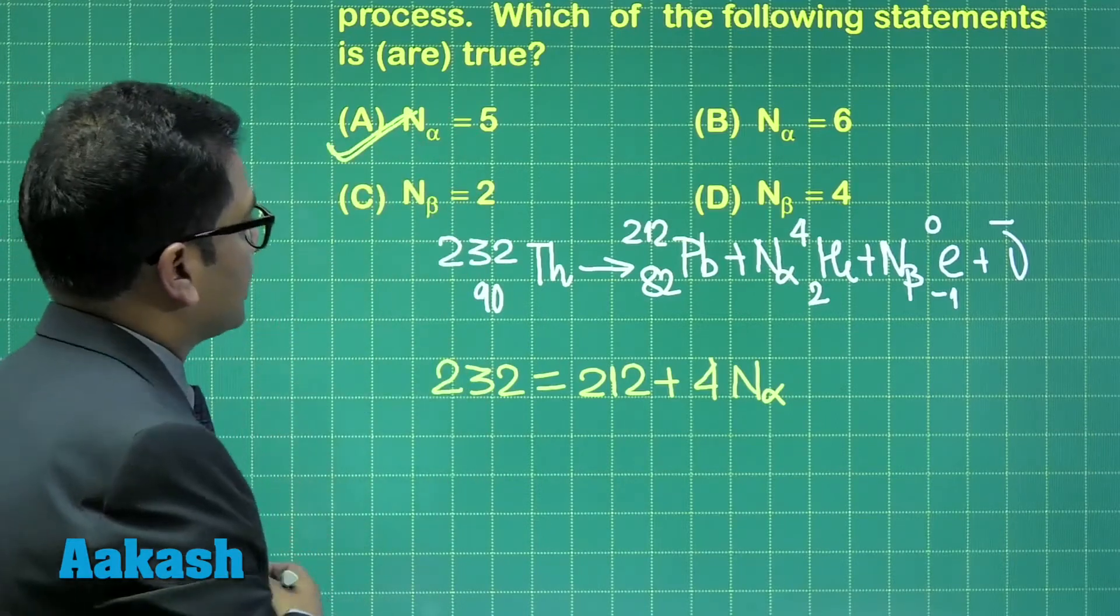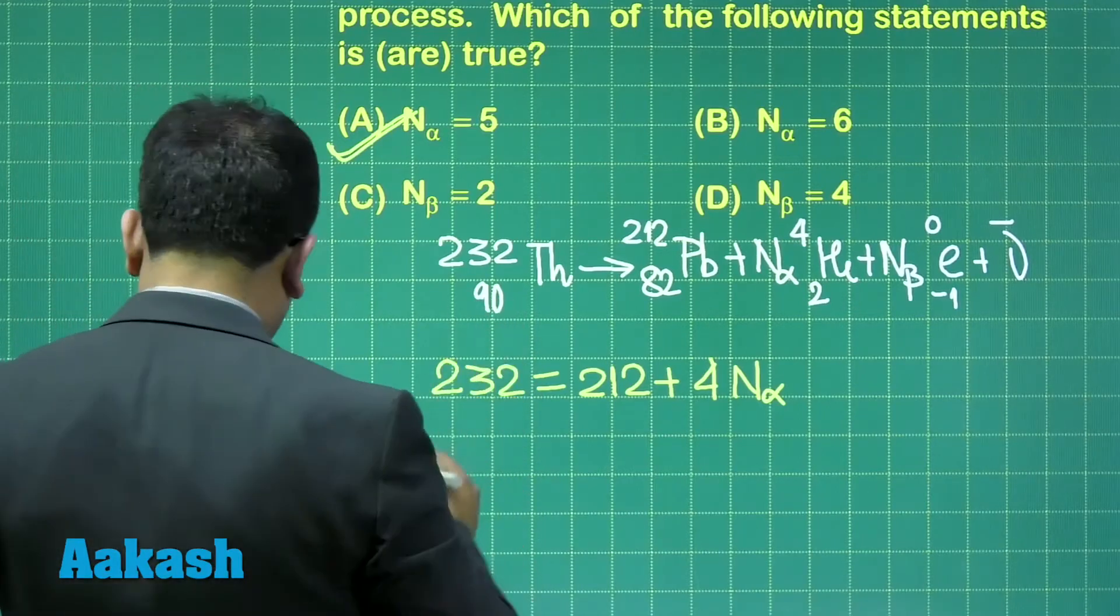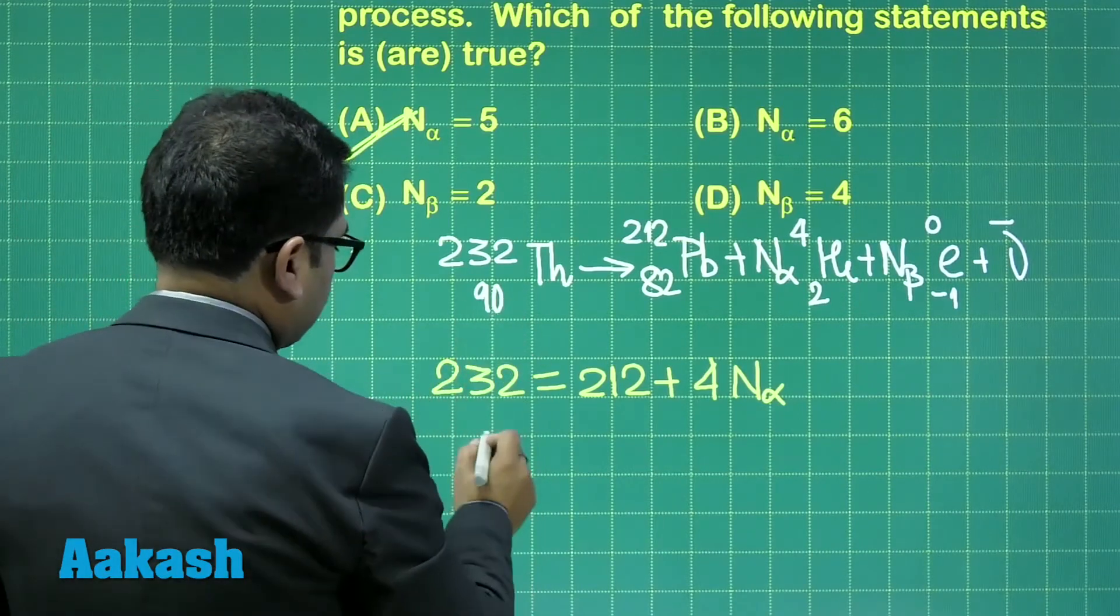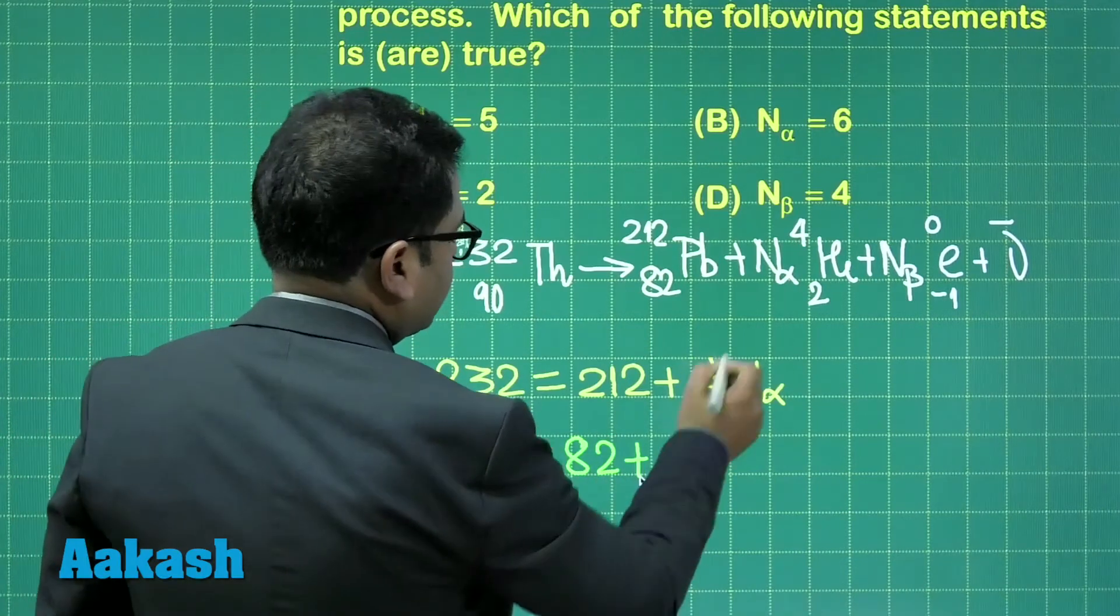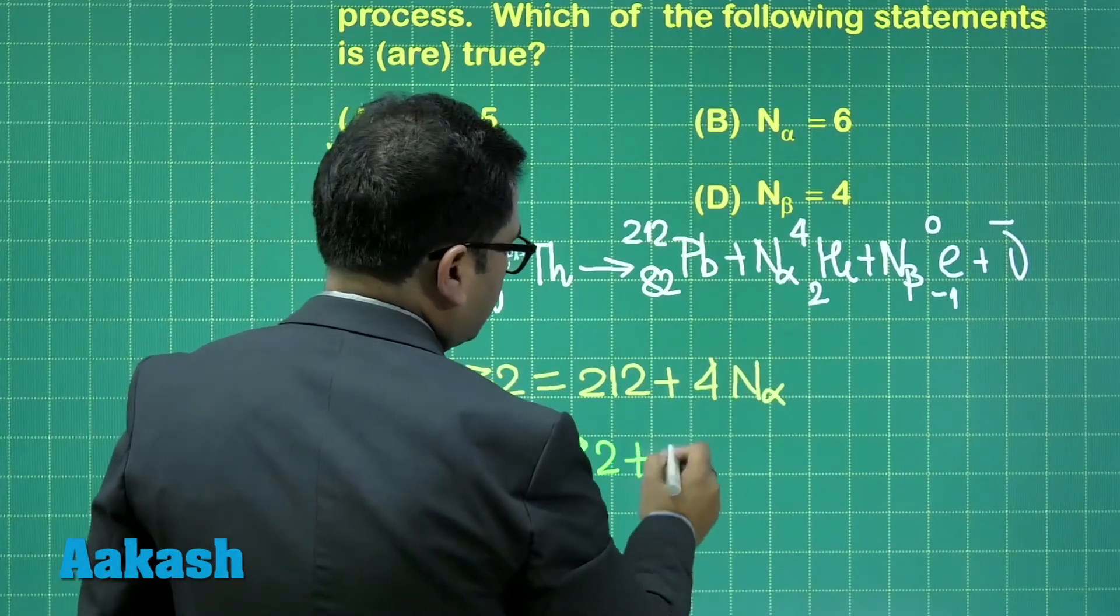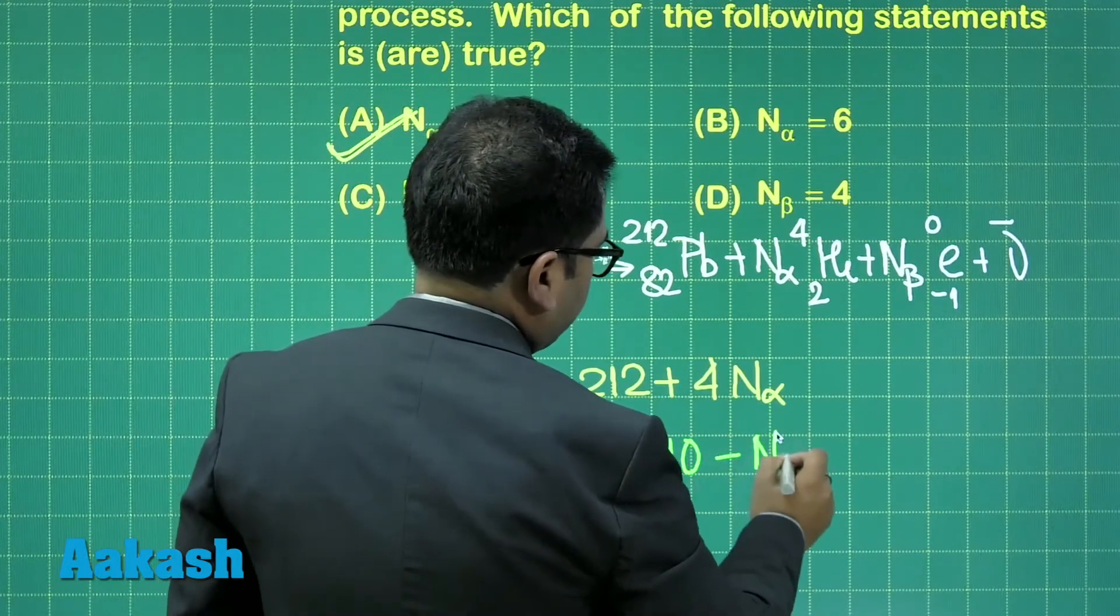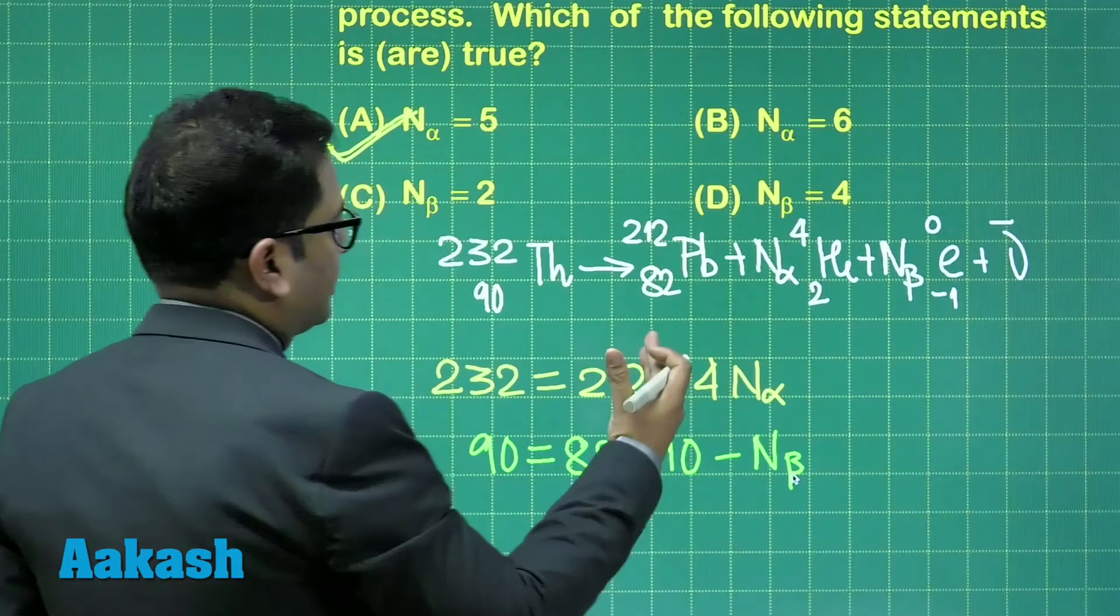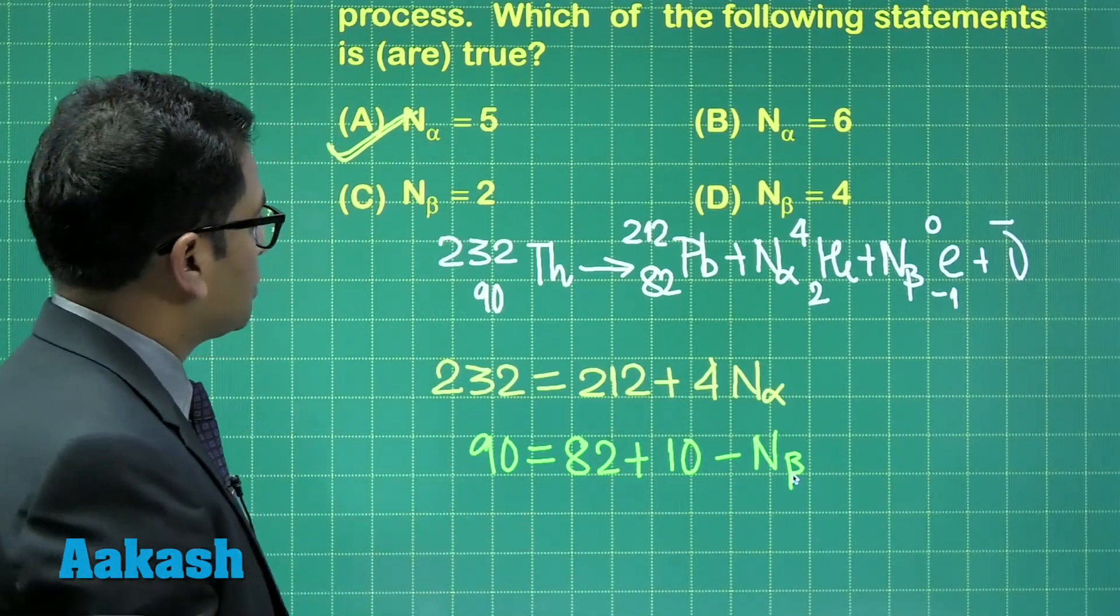Then the number of beta particles - here the second one would be 90 equals to 82 plus, this is 5, so 5 into 2, that's going to be 10, minus N_beta. We are just conserving the atomic number now, and when you do that, N_beta comes out to be 2.